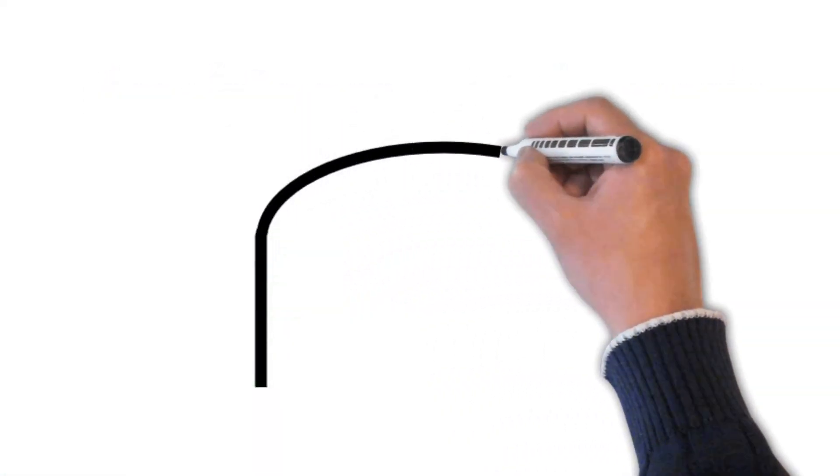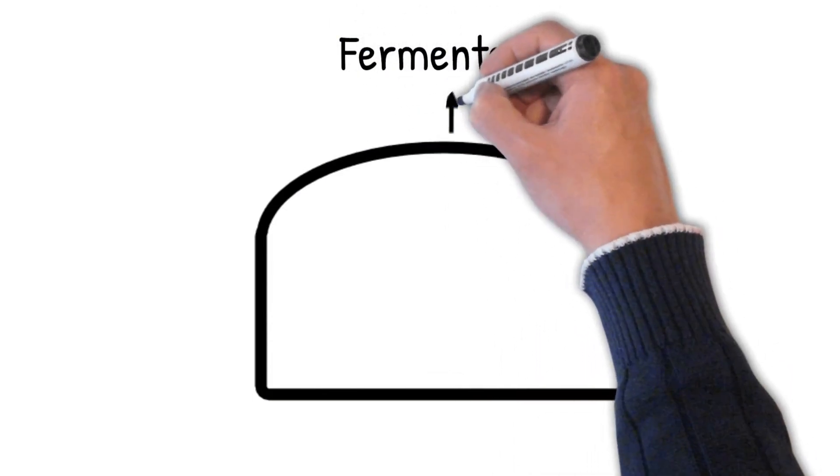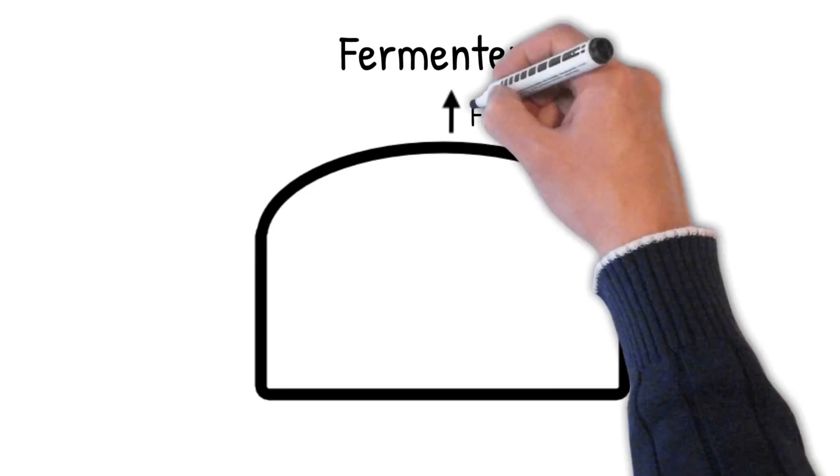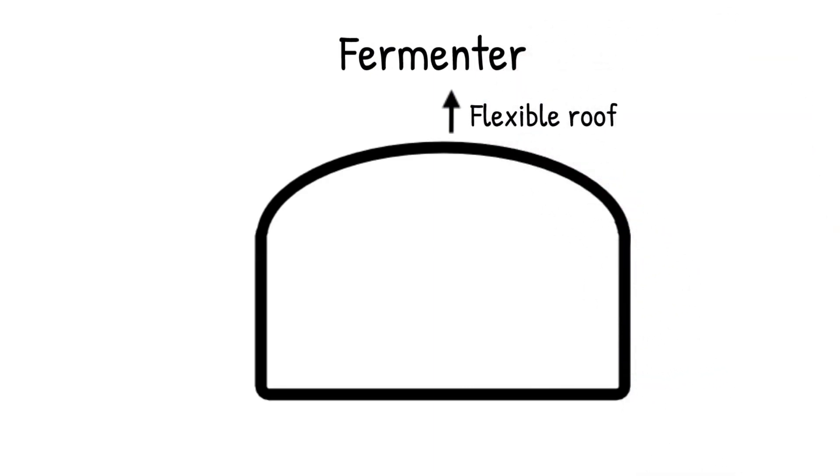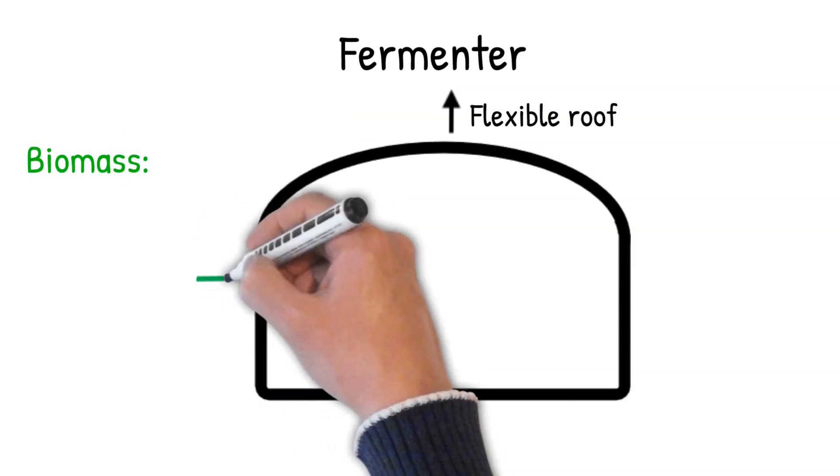The central process in a biogas plant happens in the fermenter. This is the usually round container with a flexible roof, a kind of bubble that can be seen from afar in biogas plants. Biomass is fermented in the fermenter.